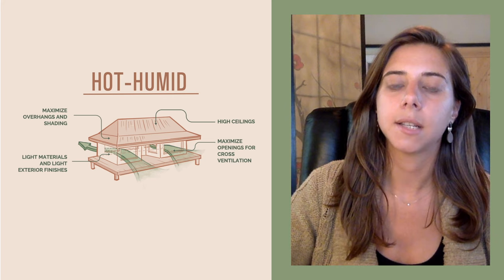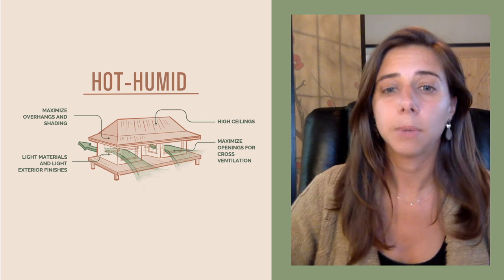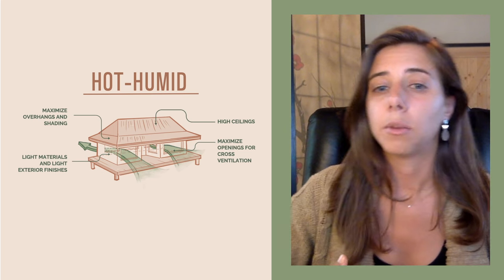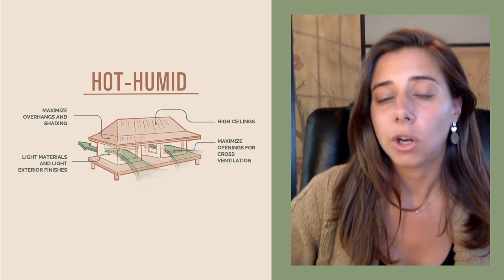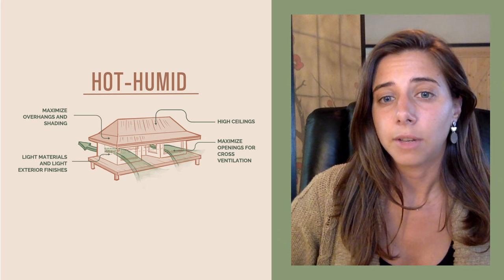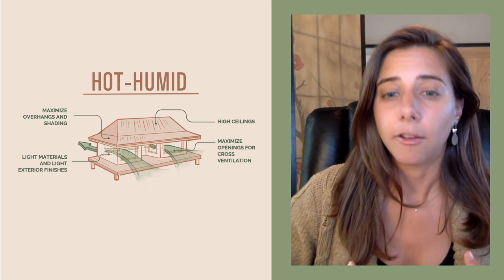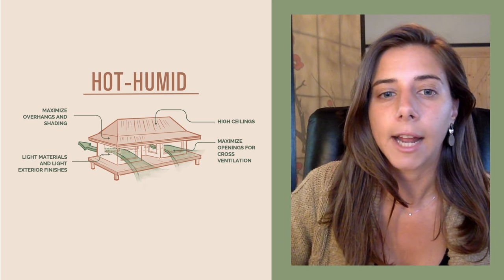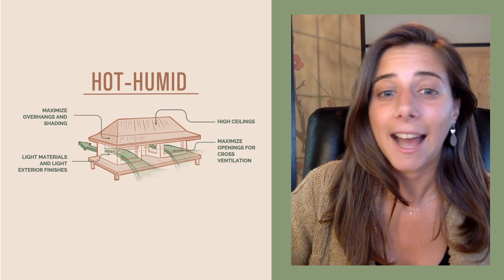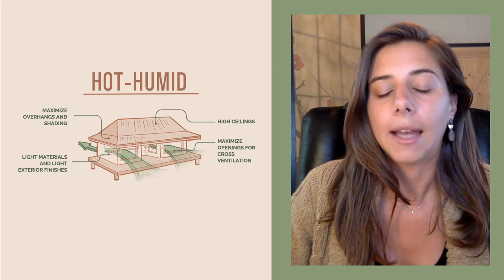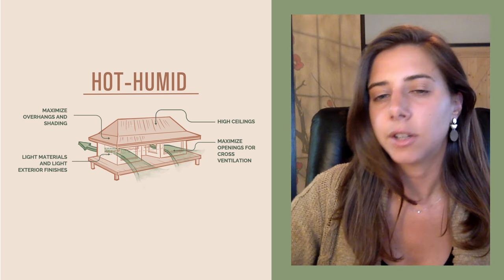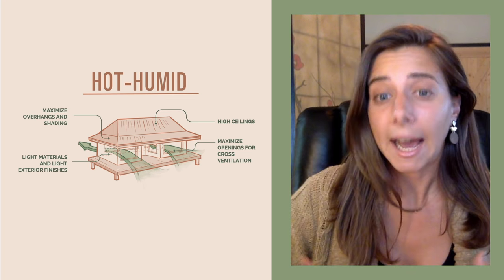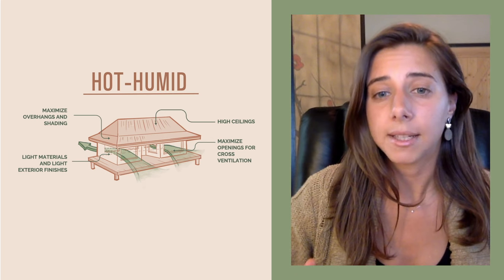With hot humid houses, maximize those overhangs. Typically in a humid climate there's going to be a lot of rain, so the more overhang you have the better — it protects those walls and allows indoor-outdoor flexibility. Another main feature is cross ventilation: know where those prevailing winds are and have operable windows on opposite-facing sides to ensure a breeze flows through. I lived in Maui for eight years and some buildings just did not access those prevailing winds, which was a huge bummer. You want light materials and exterior finishes, similar to hot arid but not as extreme, and high ceilings to let that hot air rise up and vent out.